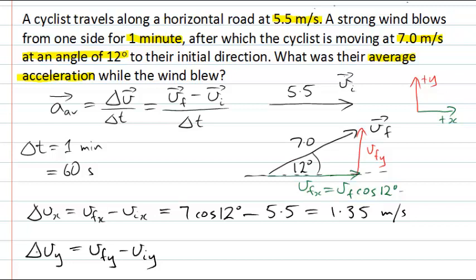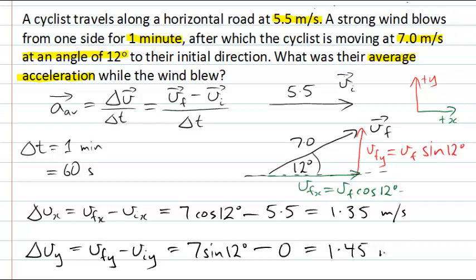Now I do the same kind of calculation for the Y direction. The final velocity Y component is the side opposite the 12-degree angle, so it's VF·sin(12°) — that's 7·sin(12°). I subtract the Y component of the initial velocity, but since the initial velocity is entirely in the X direction, its Y component is zero. That gives the Y component of the change in velocity as 1.45 metres per second.